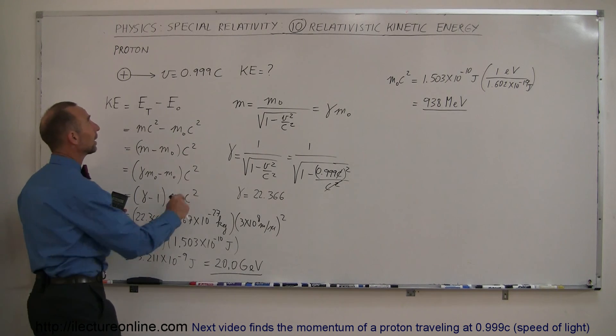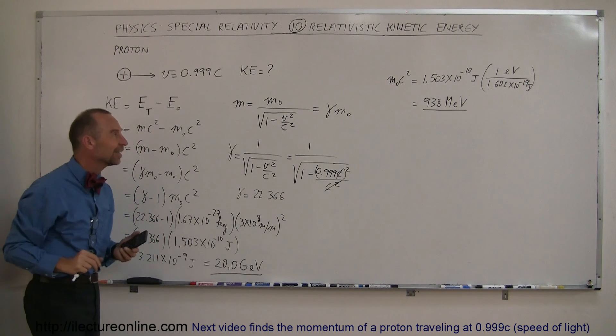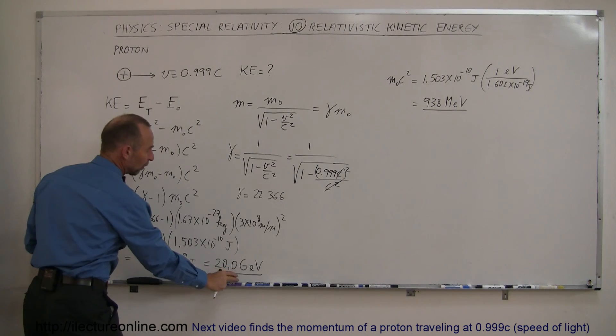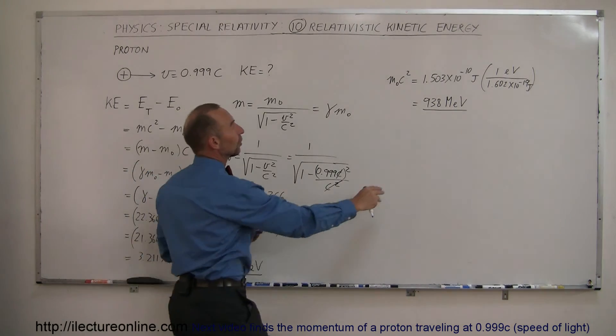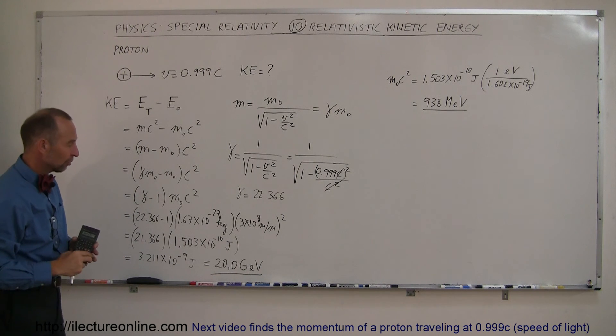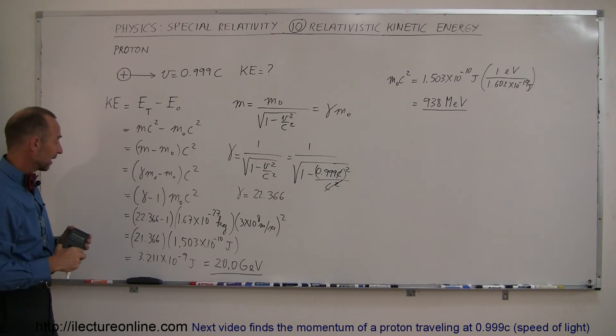So a proton that's been accelerated to 0.99c, it will have so much kinetic energy that the kinetic energy is equivalent to more than 20 times the rest mass energy. So in electron volts, it's 20 gigaelectron volts. Just to get a feel of how we calculate the relativistic physics energies of objects like protons and neutrons and alpha particles, things like that, that get accelerated very fast in accelerators, that is how we find the kinetic energy of those objects.